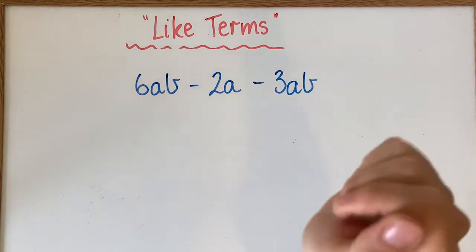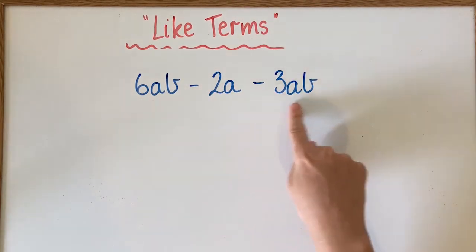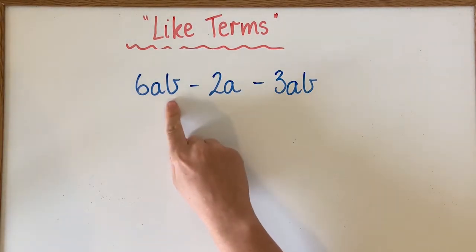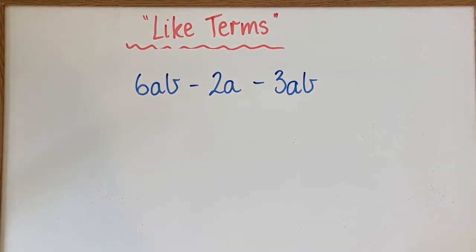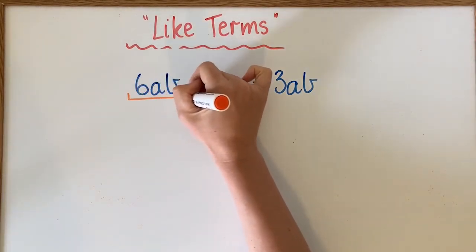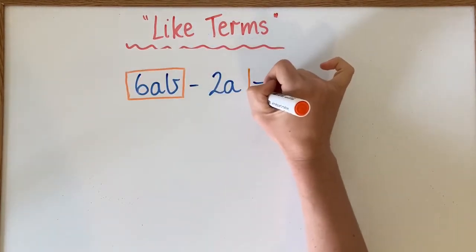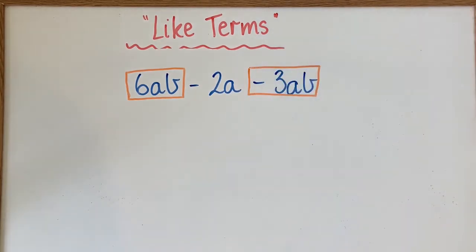For this one we have three terms. What we need to do is determine what is alike. We can see this has AB, this has just an A, and this has AB. So the ones that have AB — they're alike, they are similar. So positive 6AB and negative 3AB are alike.